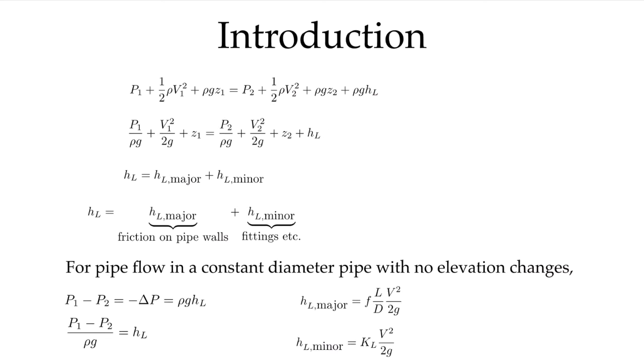We're going to take into account in this case both the major and the minor losses. The major losses are given by the friction factors for the fully developed flow in our straight piping sections, and the minor losses are due to those additions to our piping system: the fittings, the elbows, the valves, and so on.